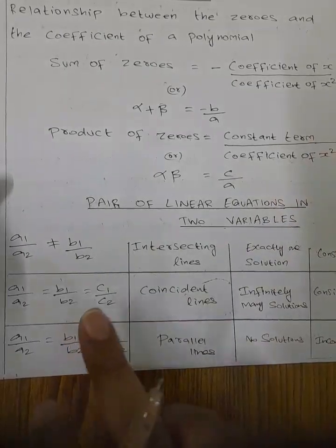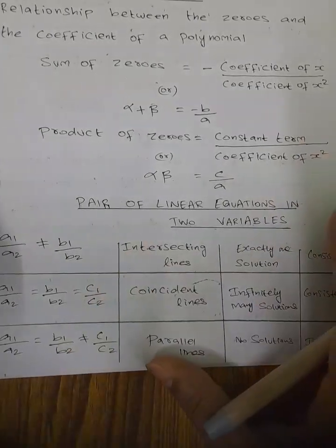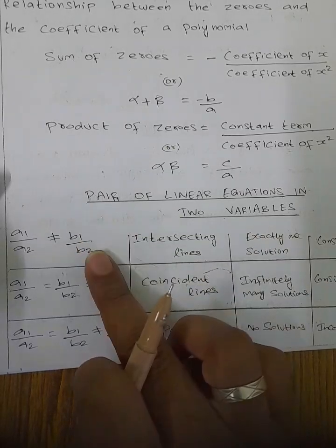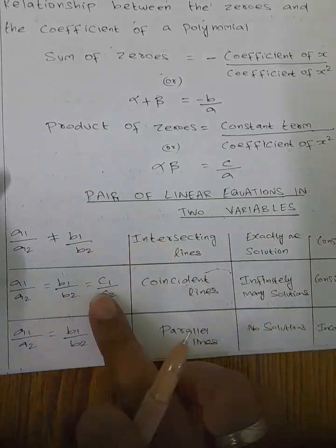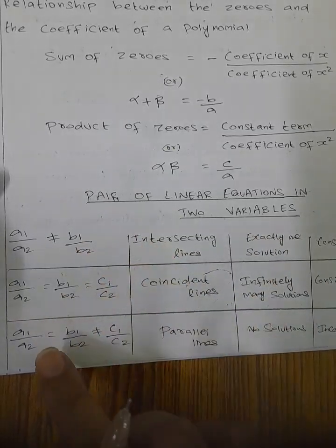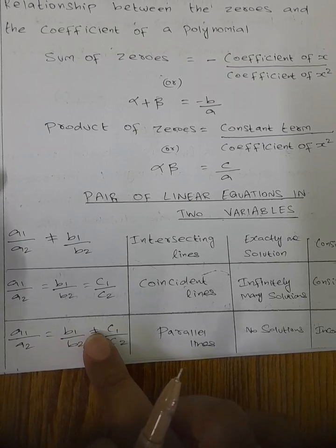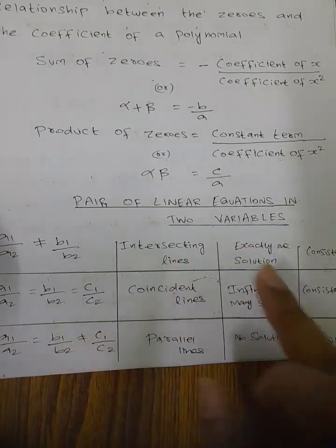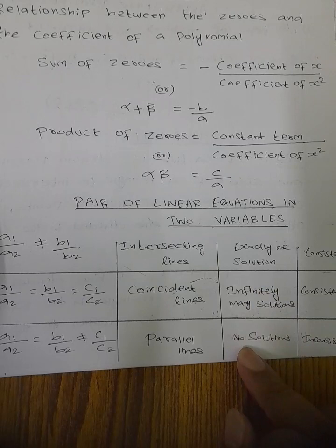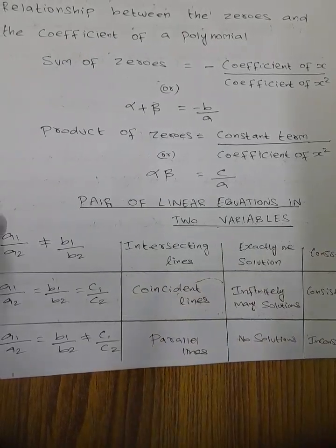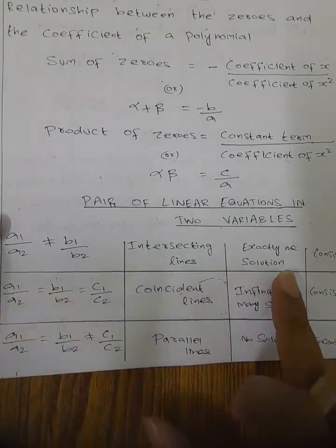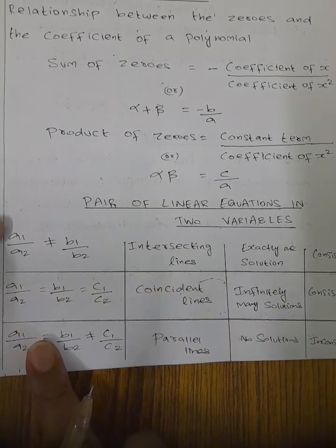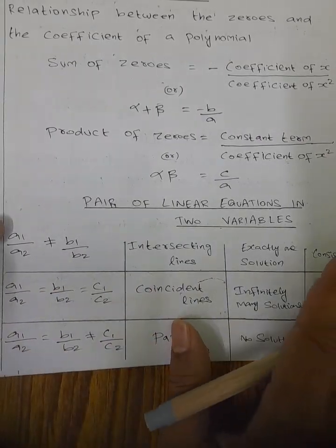Next, pair of linear equations in two variables. There are three cases: Intersecting lines — a1 by a2 not equal to b1 by b2 — gives exactly one solution and is consistent. Coincident lines — ratios all equal — gives infinite solutions and is consistent. Parallel lines — a1 by a2 equal to b1 by b2 but not equal to c1 by c2 — gives no solution and is inconsistent.